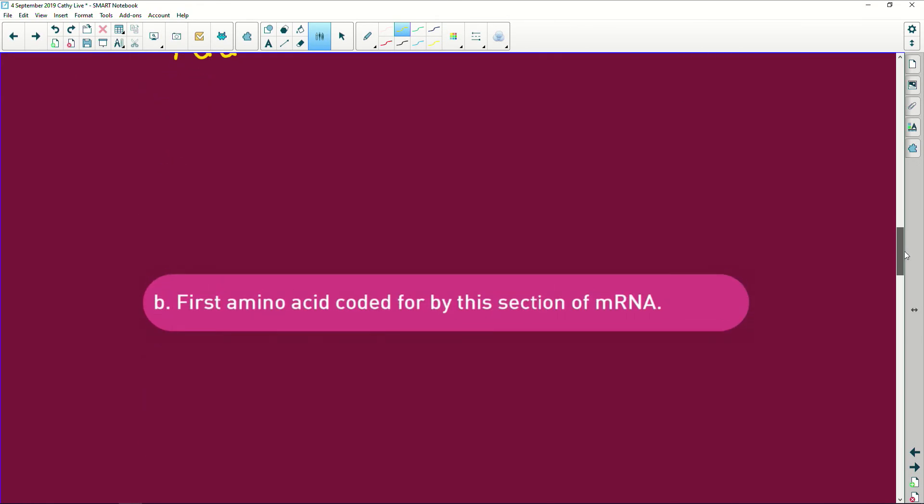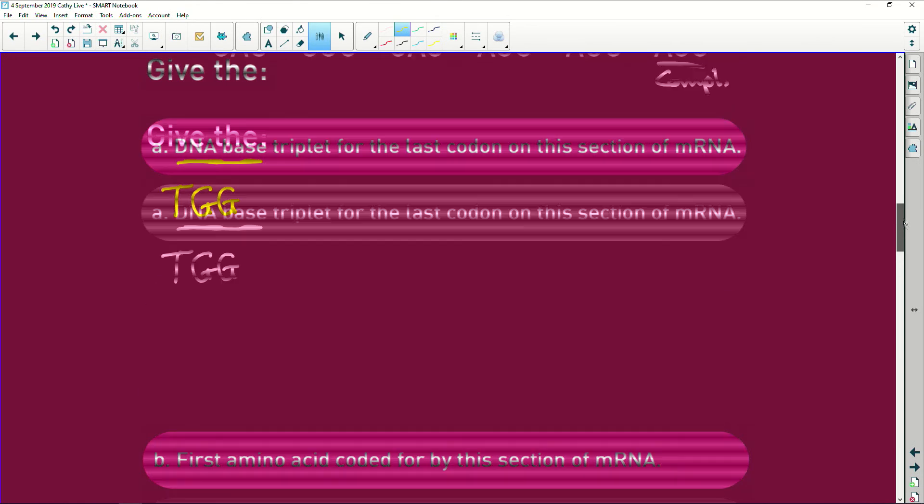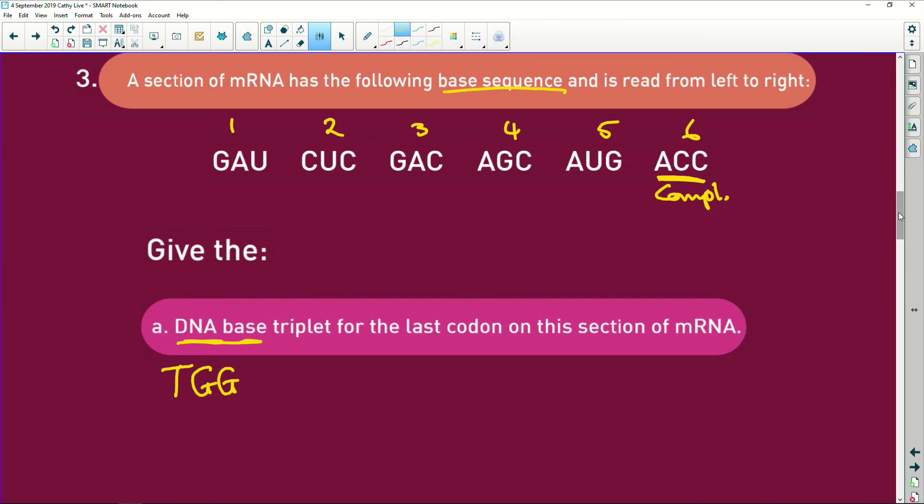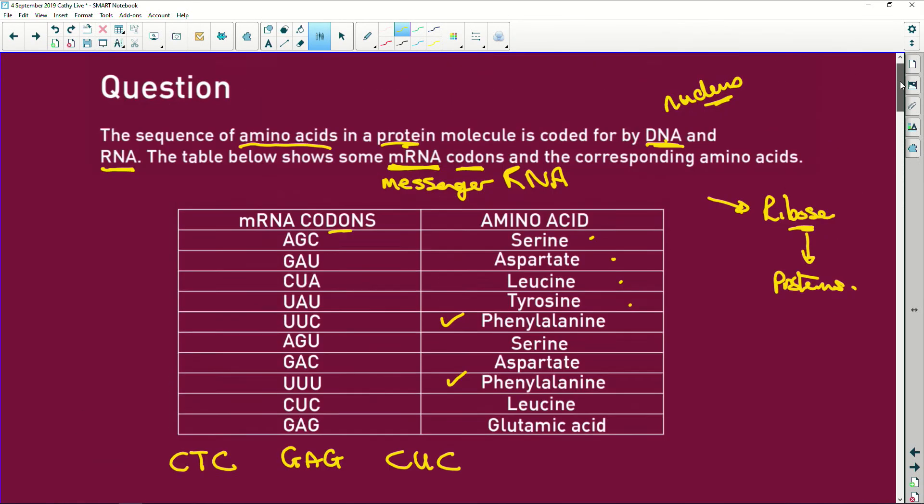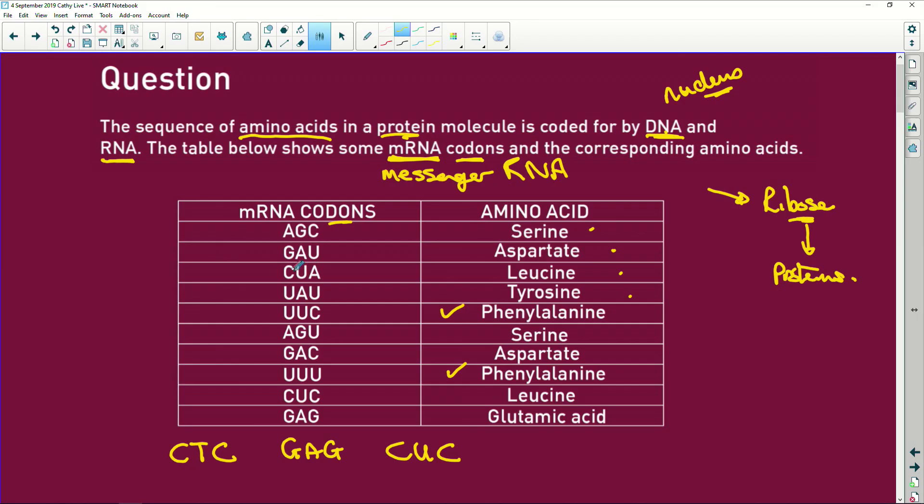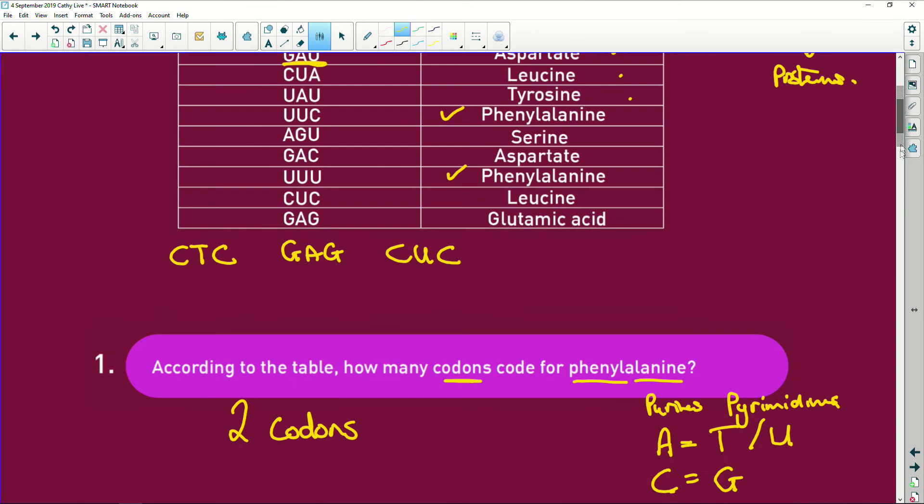The first amino acid coded for by this section of RNA—so the first amino acid is GAU. And now we'll go back up here: GAU, GAU, there we go, there's GAU. It's aspartate, there's our amino acid.